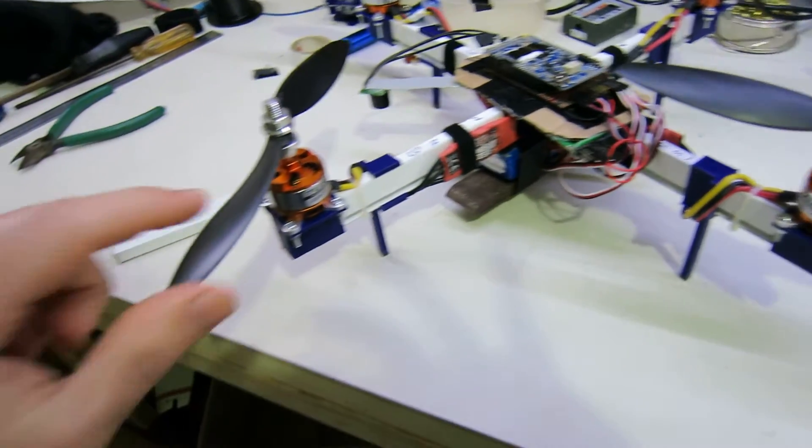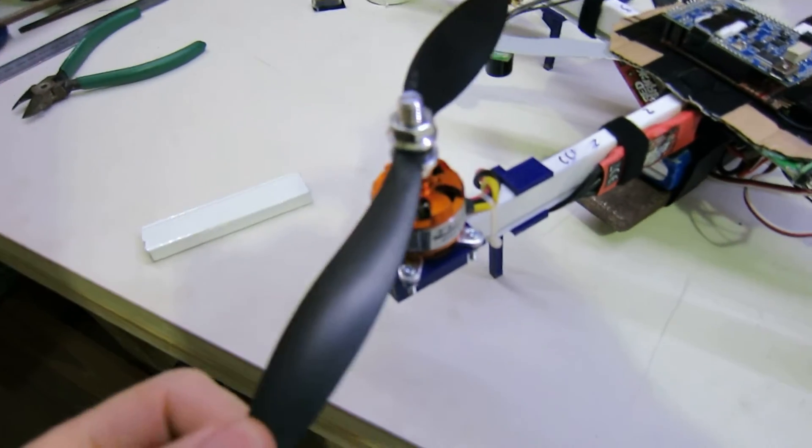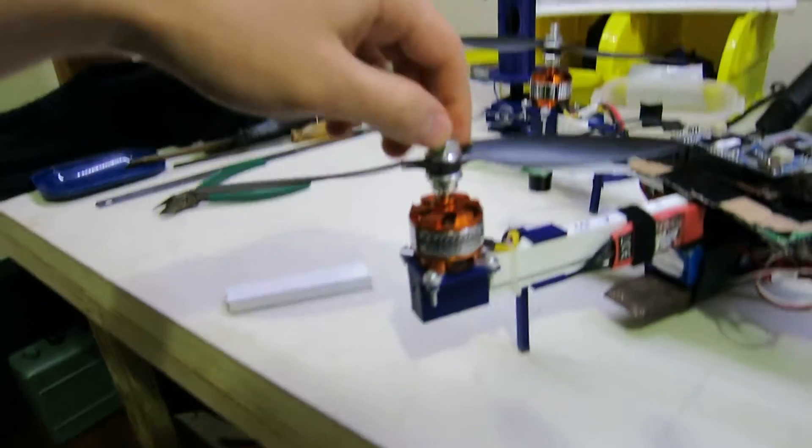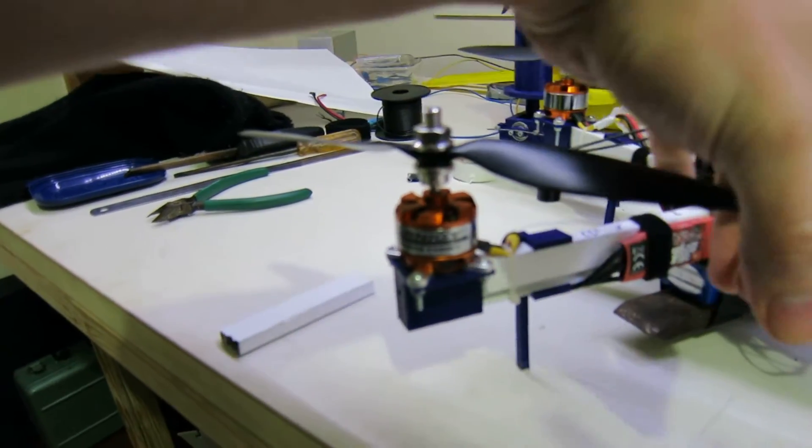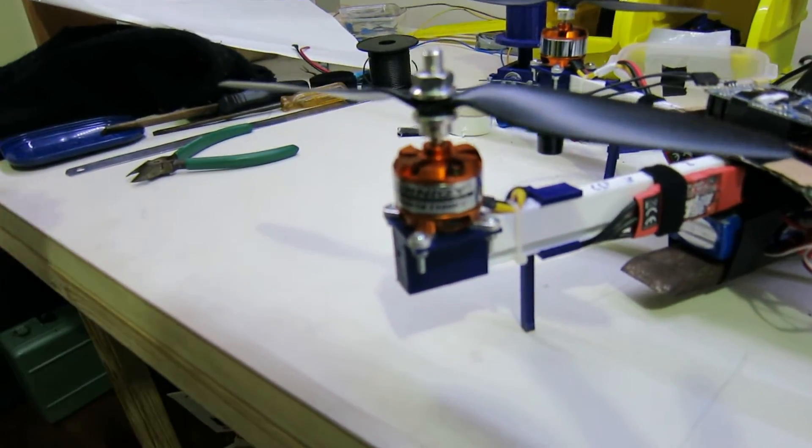The props are 9 by 4.7 and the motors are 1100 kV brushless outrunners.